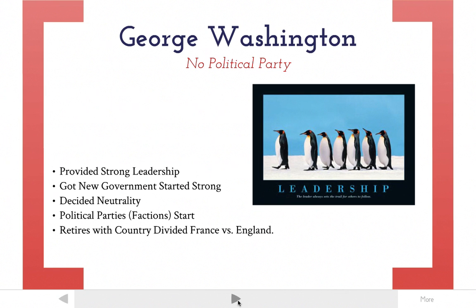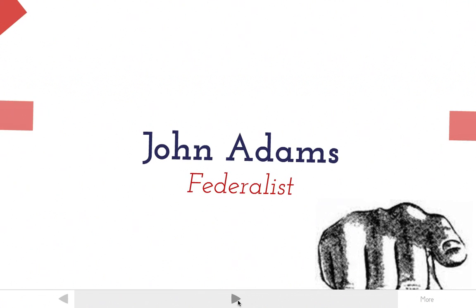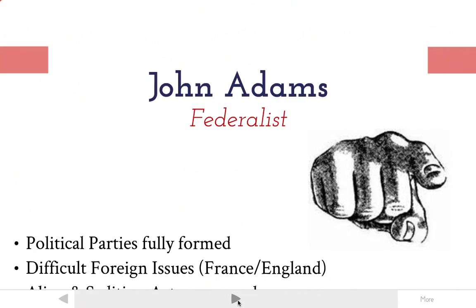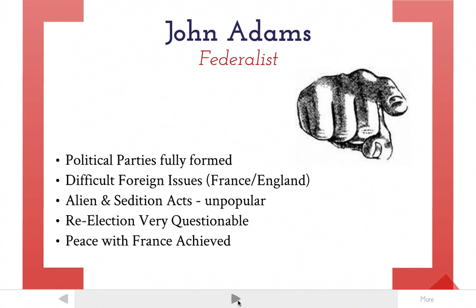Toward the end of Washington's presidency, we started to see problems form, and one of the biggest was the formation of political parties. This leads us to our second president, John Adams. He was a Federalist — the first president to belong to a political party. John Adams had to deal with full-fledged political parties, which means that himself and the Federalists were basically counteracting everything the Democratic-Republicans were trying to do, and vice versa.